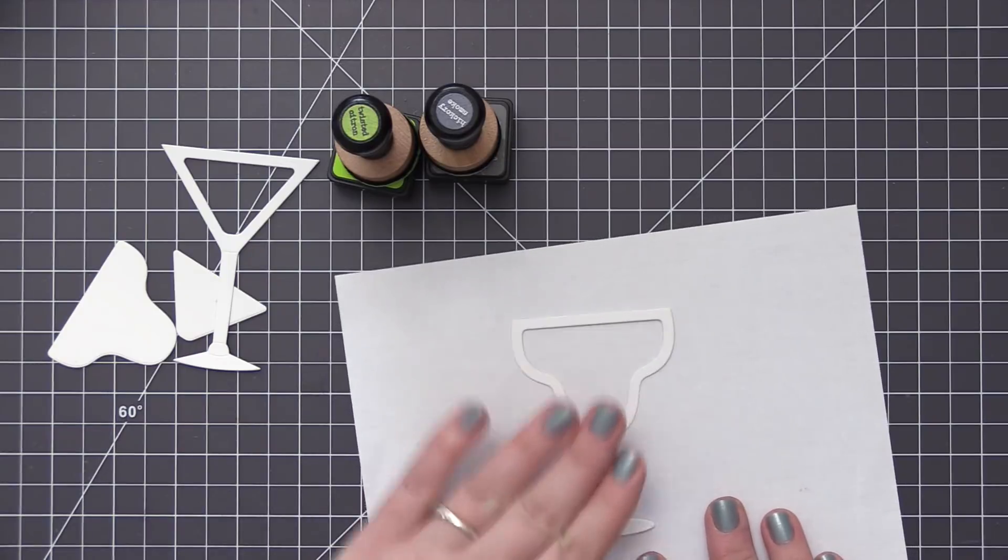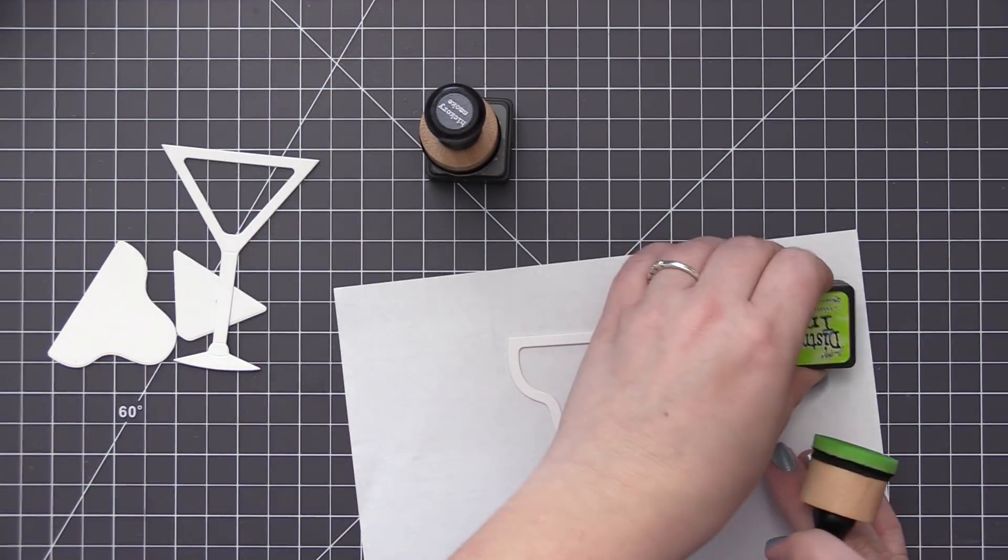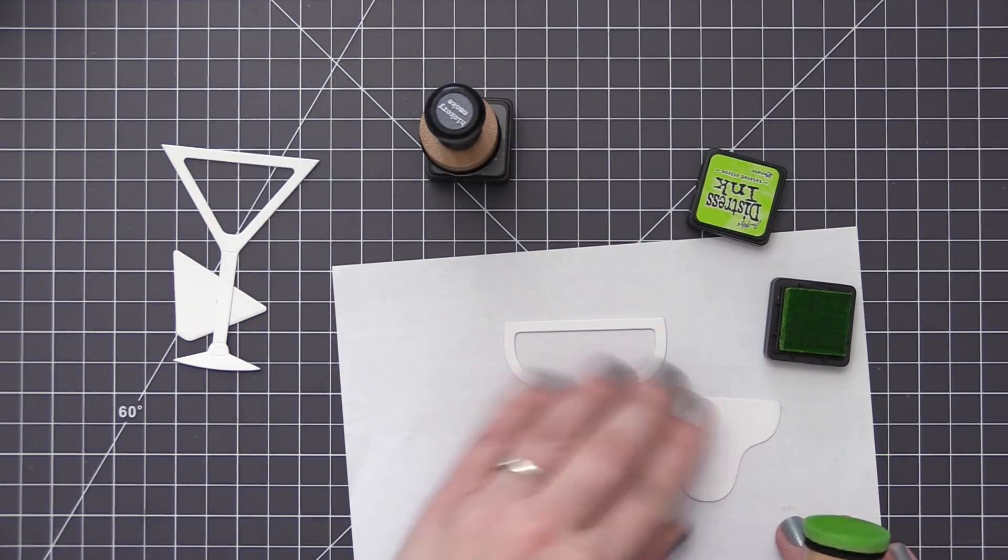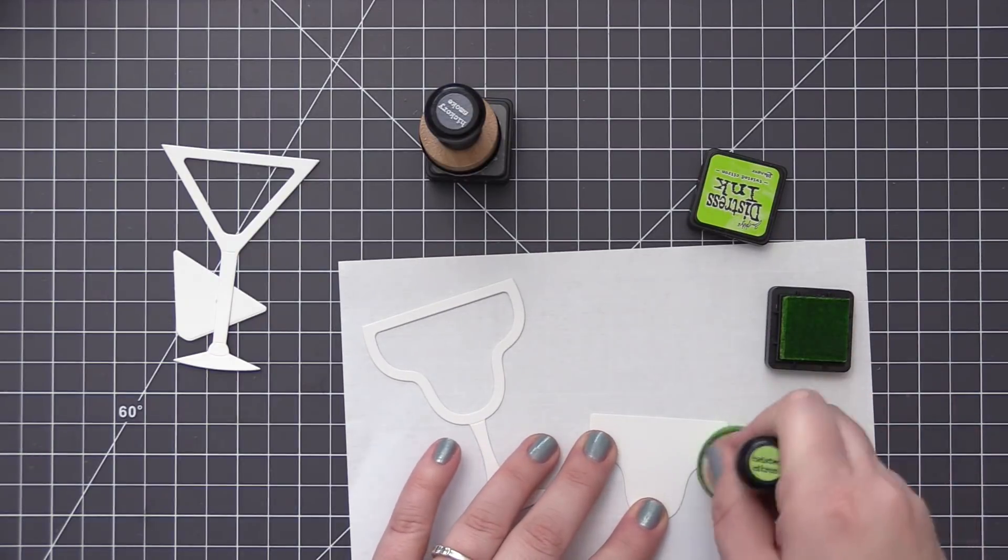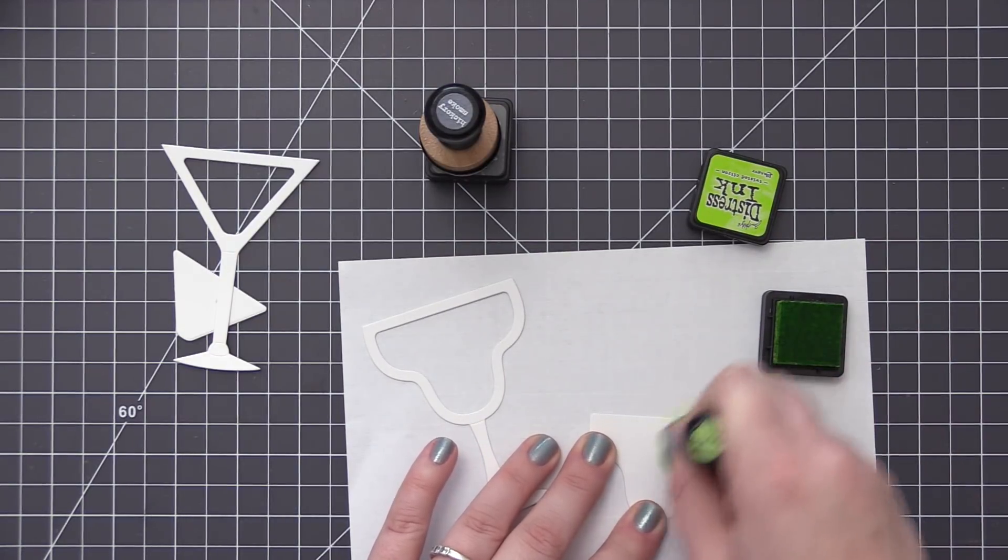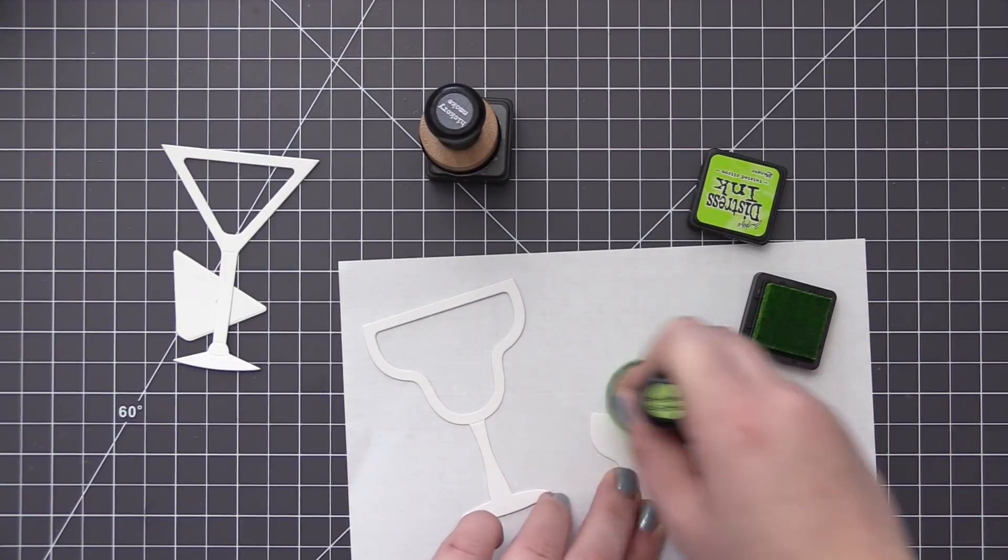They have an opening in the center that can be used with the coordinating shaker pouches, which we're going to use here in just a minute. So before we get to the shaker part of it, I do want to add some inking to my glasses just to add a little bit of color to them.